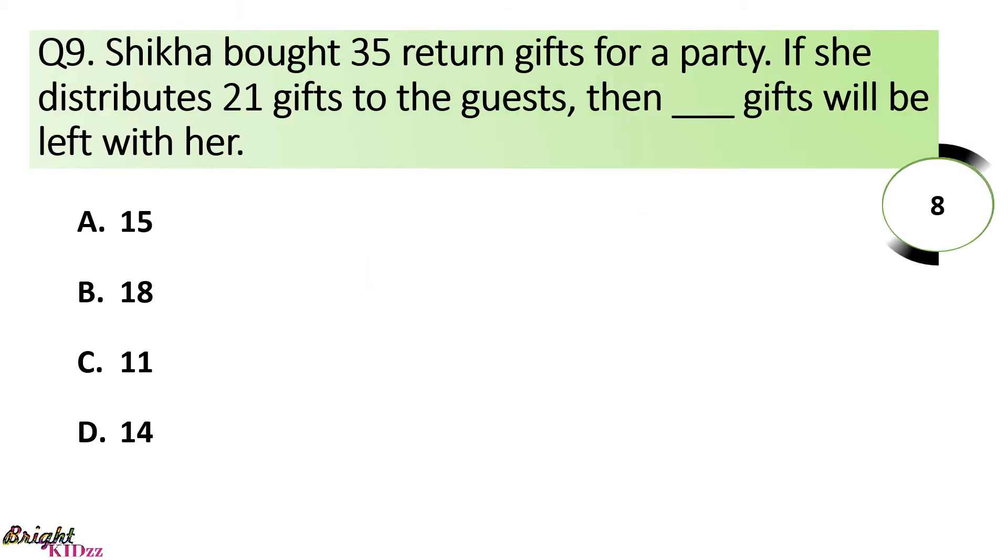Shikha bought 35 return gifts for a party. If she distributes 21 gifts to the guests, then dash gifts will be left with her. So, 35 minus 21 is equal to 14.